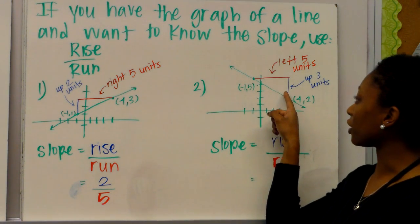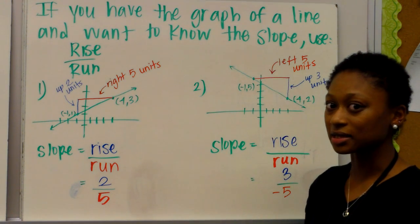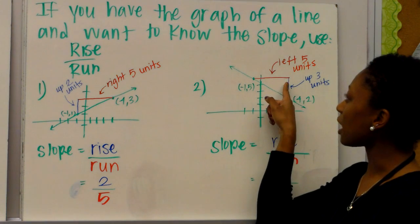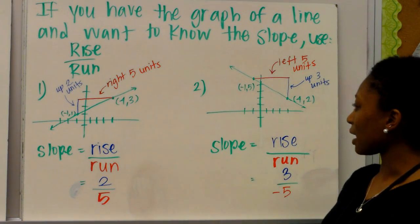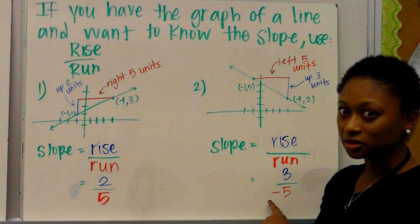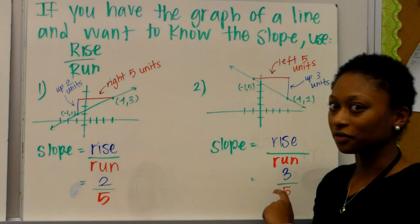Here, I go up three. So that's my rise. Up three. But this time, I go to the left instead of the right. So that's going to be a negative 5 units. So my slope would be negative 3 fifths.